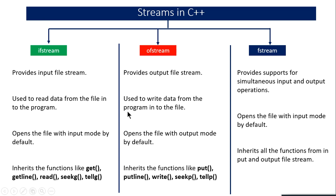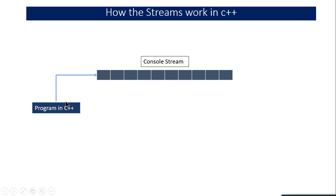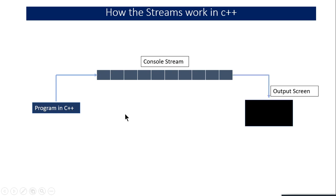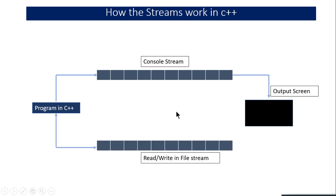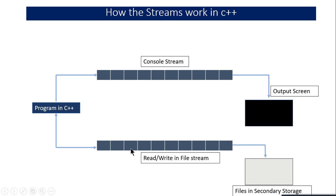These are the three stream classes available in C++. Let me teach you graphically how these stream classes work. A stream is generally called a flow — like the flow of water, the stream of data is considered by C++. Using these streams, data is transferred from one location to another. Previously when you used cout and cin, the data was passed from the program to the output screen using a console stream. Using file stream, you can read or write data from a C++ program into a file stored in secondary storage.